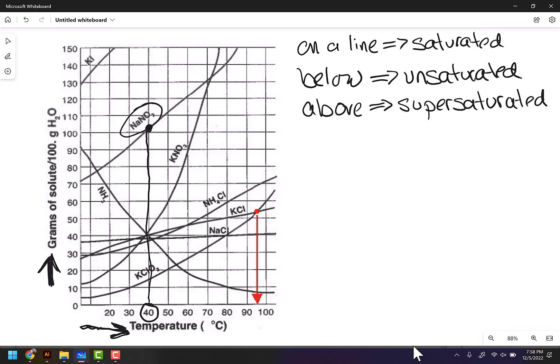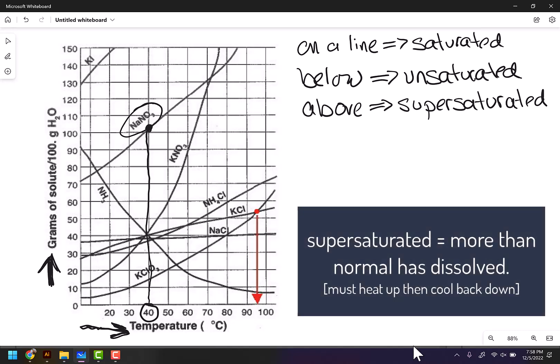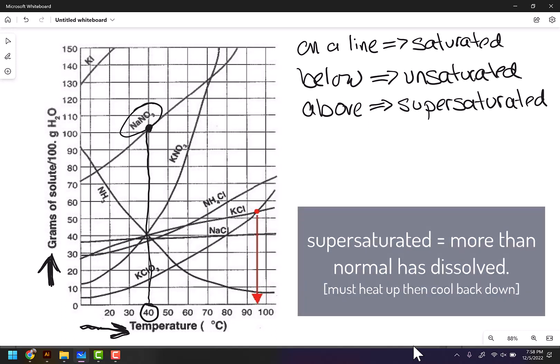In order to be supersaturated, you have to dissolve at a certain temperature and then cool it back down. When you do that, stuff will continue to stay dissolved even though technically it wouldn't have dissolved at that temperature.